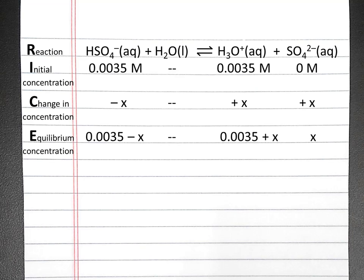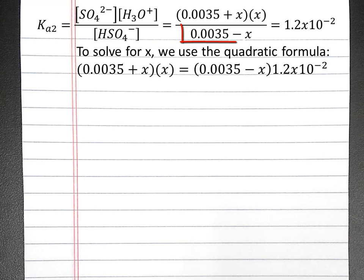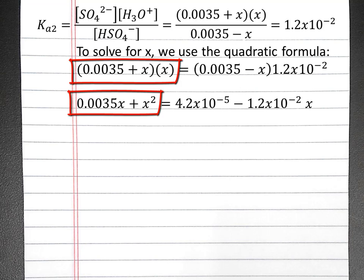Next, we'll write out the equilibrium constant expression for the reaction. To solve for x, we'll need to use the quadratic formula. We can multiply both sides of the equation by 0.0035 minus x. And the next step, we can distribute what's on both sides of the equation.